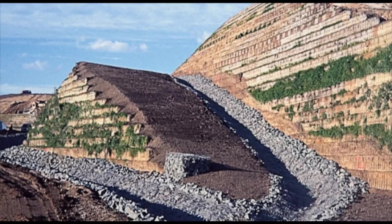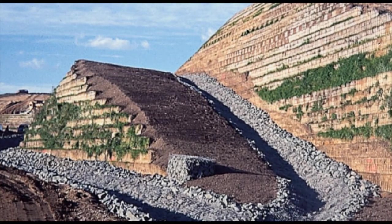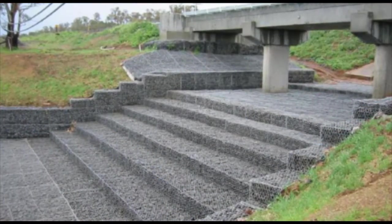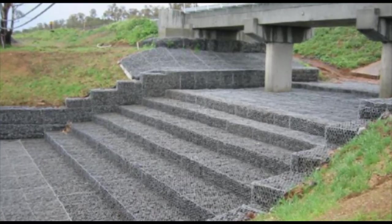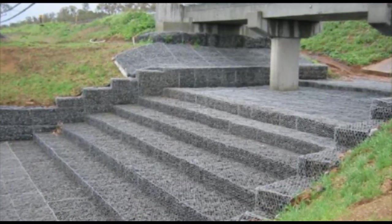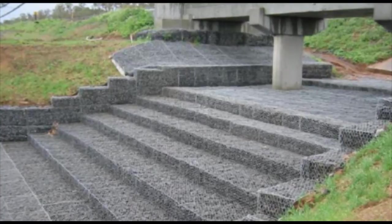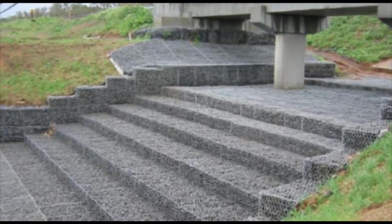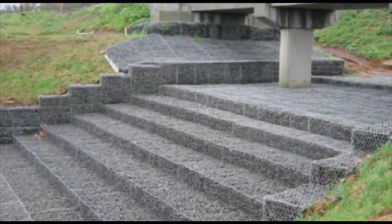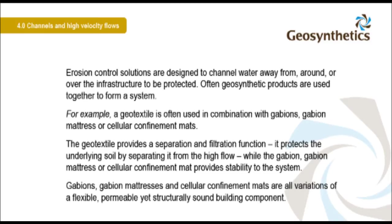A geotextile is commonly used to provide durability and stability within the drainage channel. High flows around bridge structures need to be managed — failure to do so will see erosion of the bridge abutments, leading to closure of the bridge. In this instance, a hard engineering structure using gabions controls the water flow under the structure. Erosion control solutions are designed to channel water away from, around, or over the infrastructure to be protected.